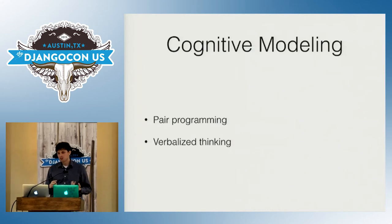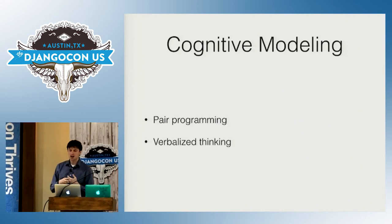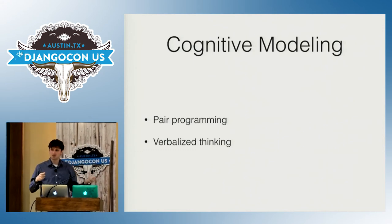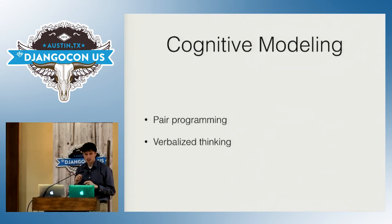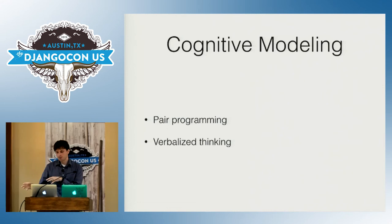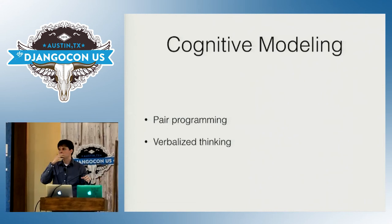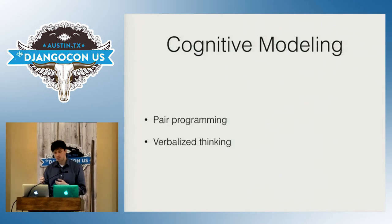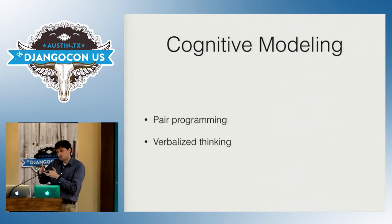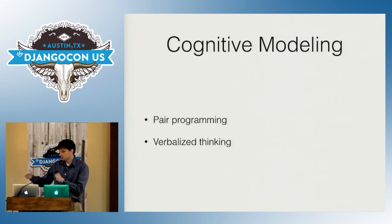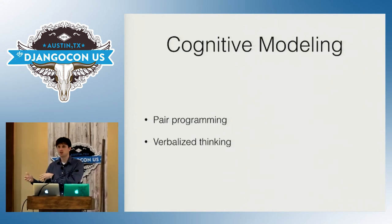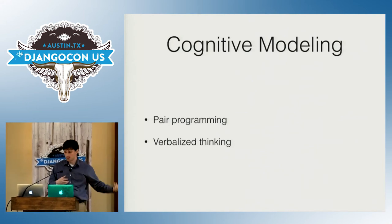One of your core skills as a teacher within constructivism is cognitive modeling — showing how you're thinking about something, which can be challenging because it's internal. One way to do this is with pair programming. When pair programming with someone you're mentoring, verbalize your thinking, talk about the problem-solving steps, decompose the problem, explain how you're thinking about each piece, and invite them to follow along or question you. This will help model the cognitive process you're going through.